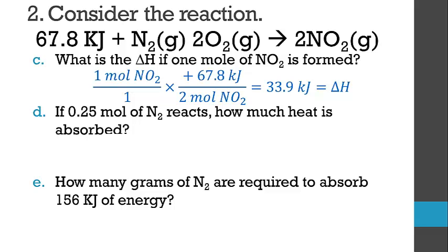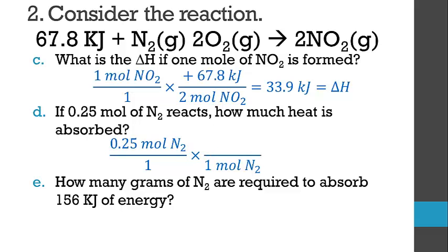If a quarter mole of nitrogen reacts, how much heat is absorbed? We expect an answer that is a quarter of 67.8. If we had one mole of nitrogen, we would need all 67.8 kilojoules, but with only a quarter of a mole, we need a quarter as much heat. Starting with a quarter mole of nitrogen and canceling units to get heat, we get positive 16.95 kilojoules. Heat has to be absorbed, and delta H is positive.